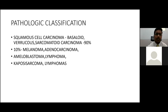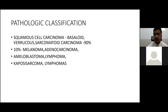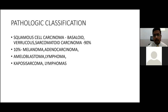Regarding pathological classification, 90% of oral cavity malignancies are squamous cell carcinoma. Variants include the basaloid type, which is associated with greater malignant potential and decreased overall survival, presenting as locally advanced disease. The verrucous type is less malignant, usually presents at an early stage, and has better overall survival. Another type is sarcomatoid carcinoma with sarcomatoid features. Less than 10% have histological features of melanoma, adenocarcinoma, ameloblastoma, lymphoma, or rhabdomyosarcoma.